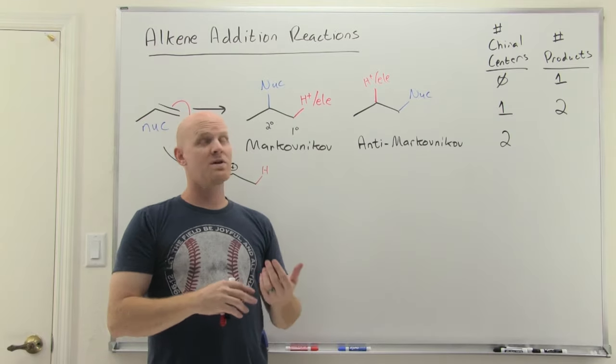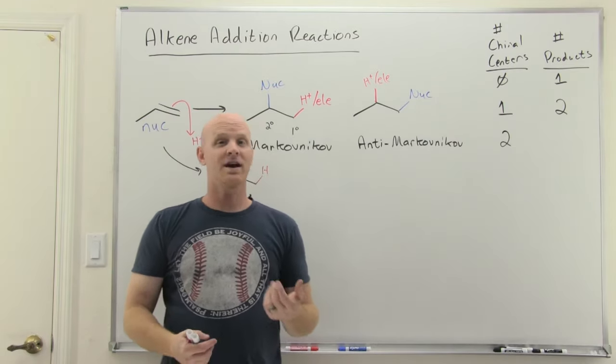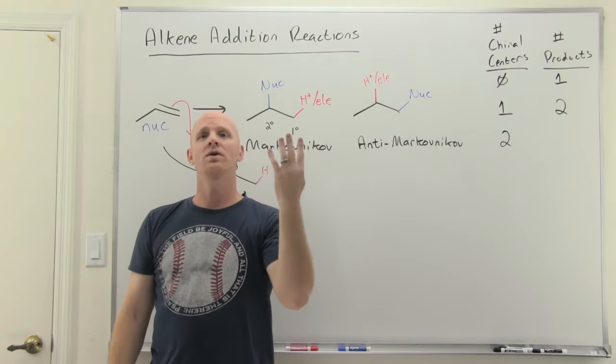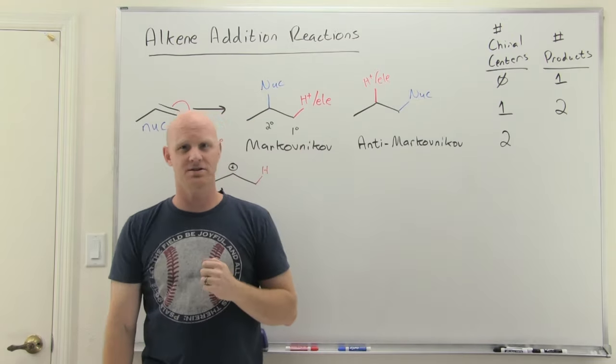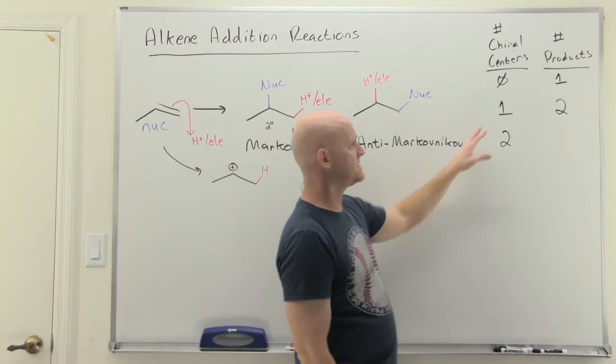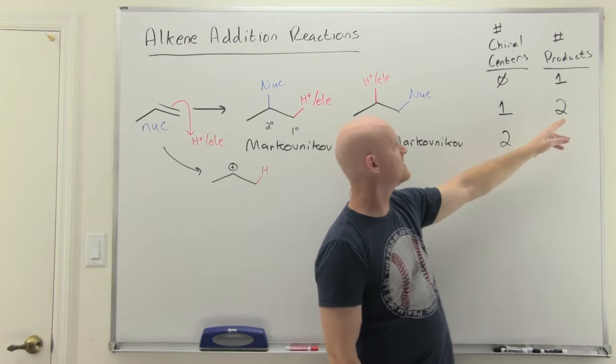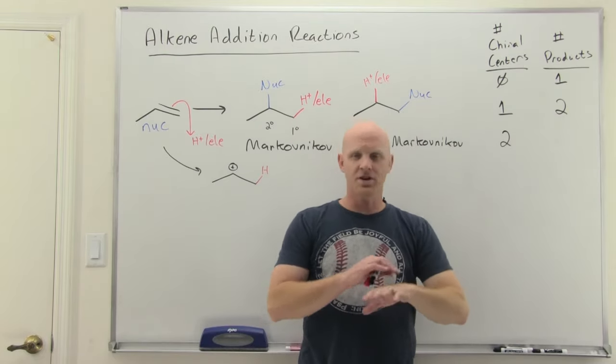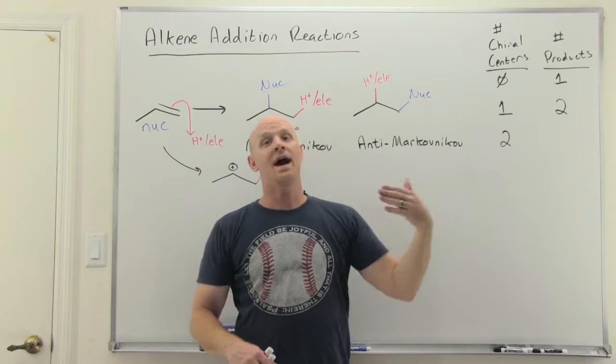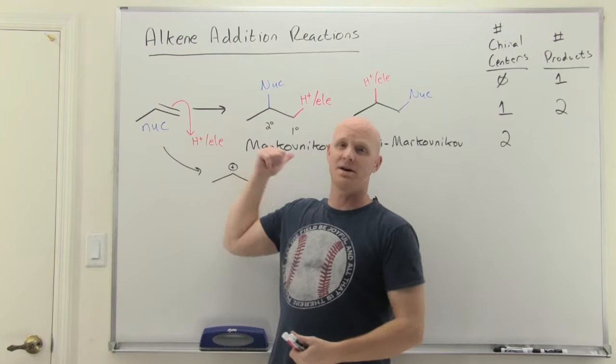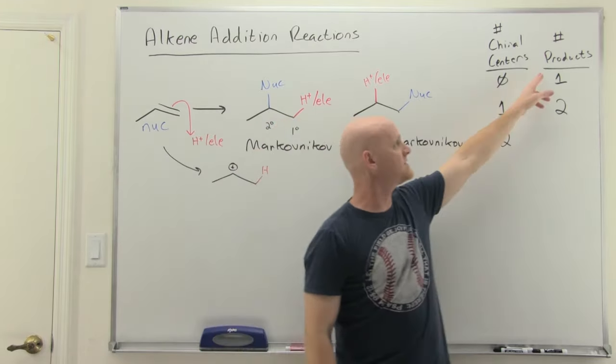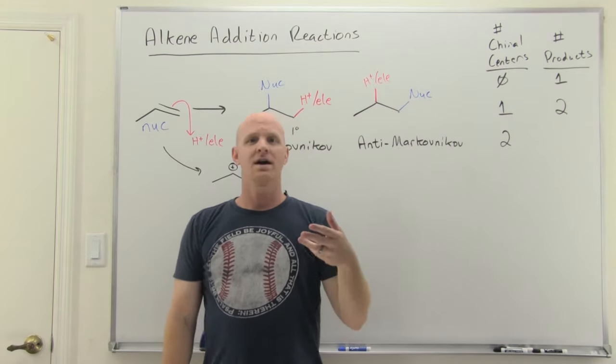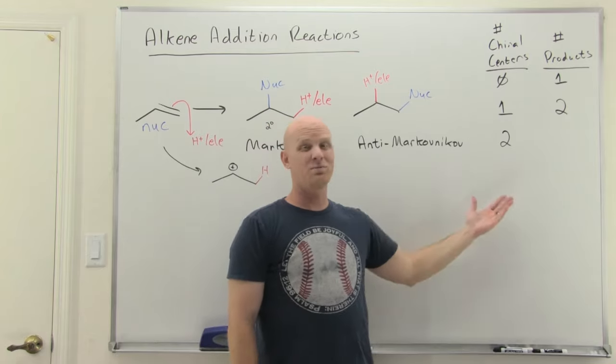And then you have the option where there's just no stereoselectivity whatsoever, and you get both the two syn and the two anti-addition products. You get all four possible stereoisomers. Now, if you look at the little table on your handout that's like this on your handout, it doesn't actually say number of chiral centers. It says number of chiral centers formed. So it's not the number of chiral centers in the whole molecule, just how many you formed when your sp2 carbons became sp3. And then also, instead of saying the number of products, it says the usual number of products.